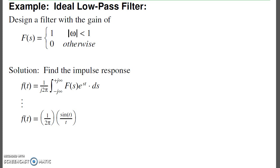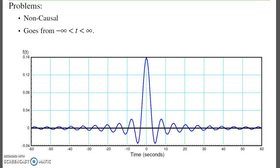If I had an ideal low-pass filter, I can find the impulse response. That comes from the definition of the Laplace transform. This is in the lecture notes, but the net result is the sinc function, sine of t over t. What that looks like is the following. So this is the impulse response of an ideal low-pass filter.